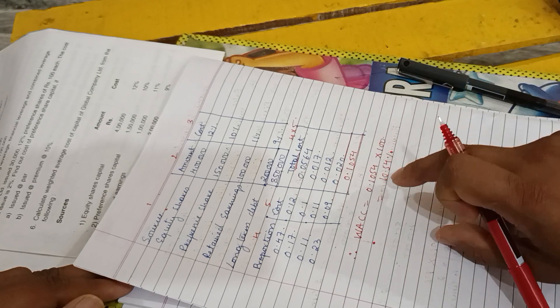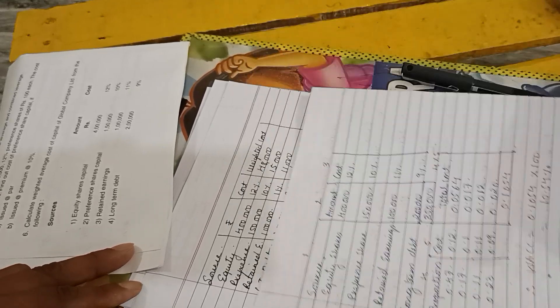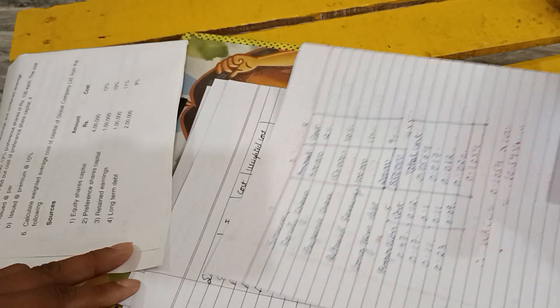That is 10.54. Both are in the range of 10. So if you apply both the methods it's okay, but the answer should be the same. Thank you.